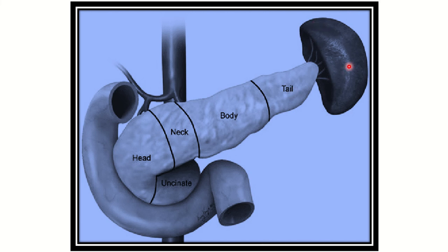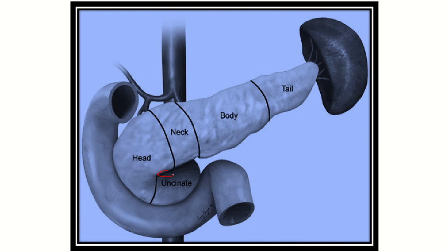Let's look at the pancreas here. We can see the pancreas and in detail there is also the spleen, and we can see the abdominal aorta behind the neck of the pancreas. In the pancreas, we can see its different parts: this is the head, neck, body, tail, and uncinate process.